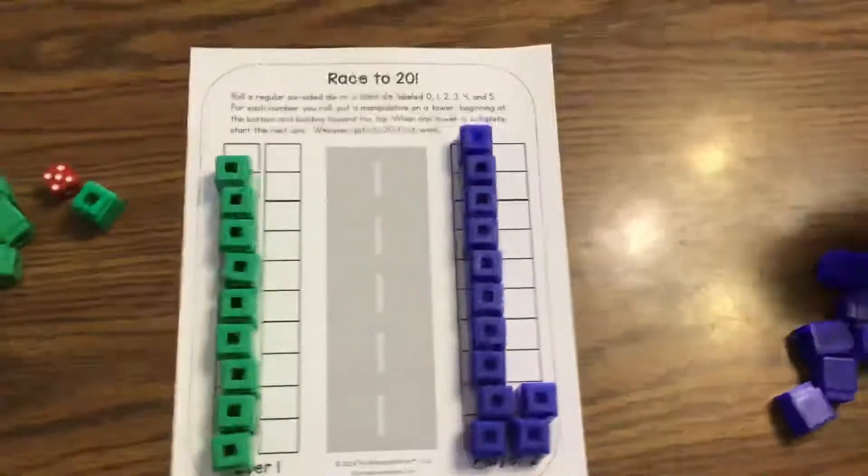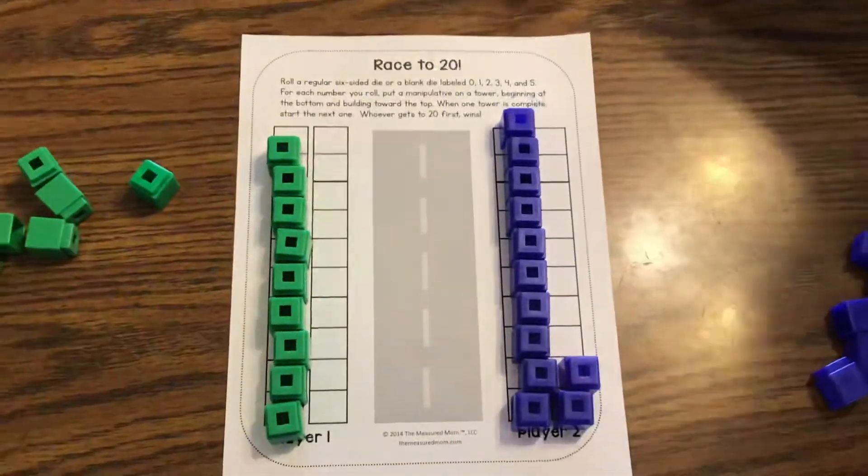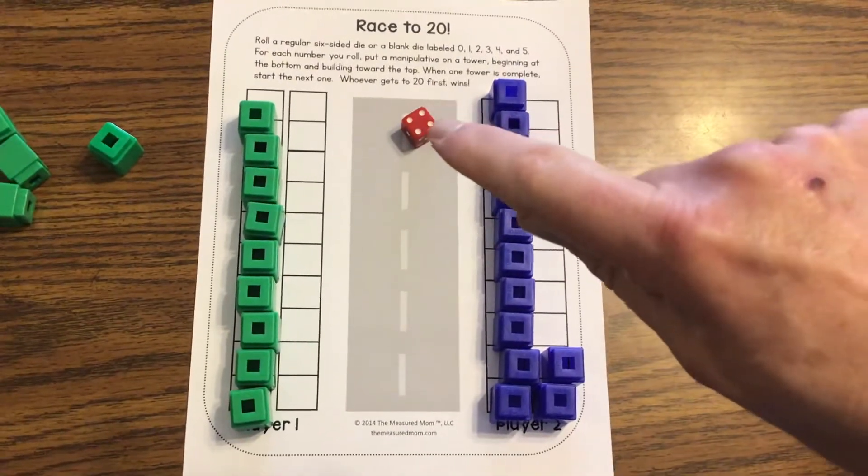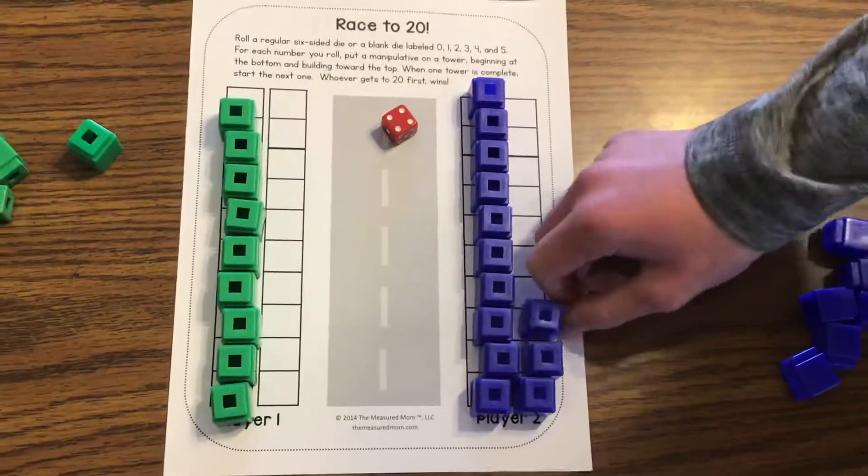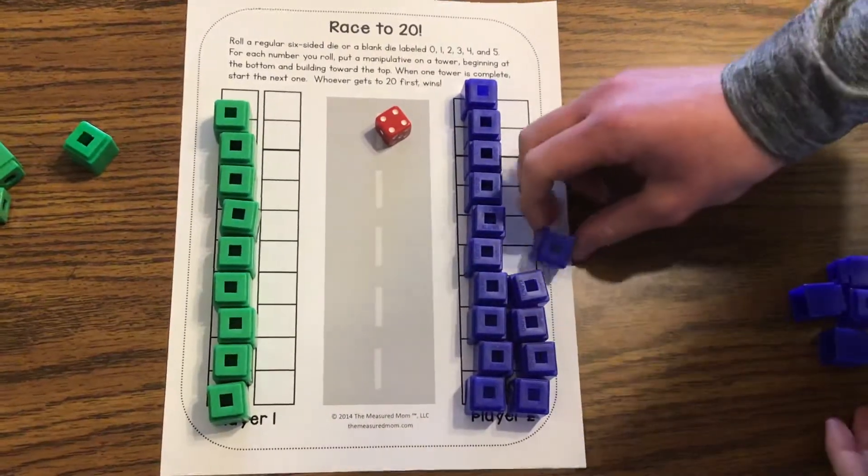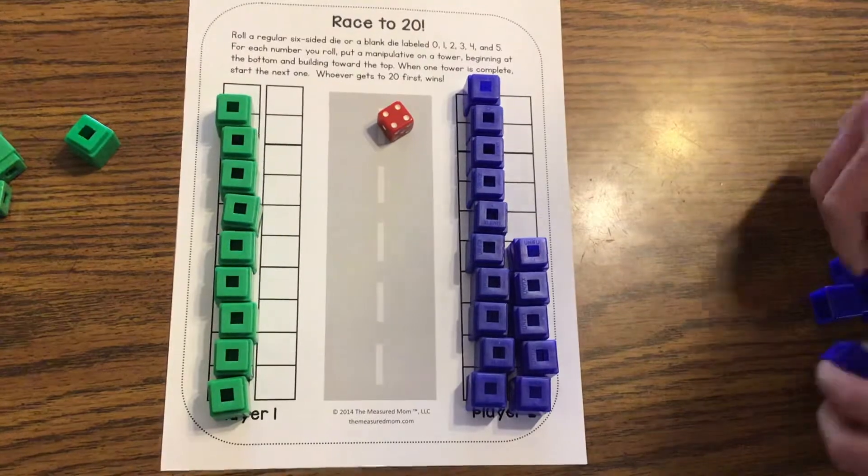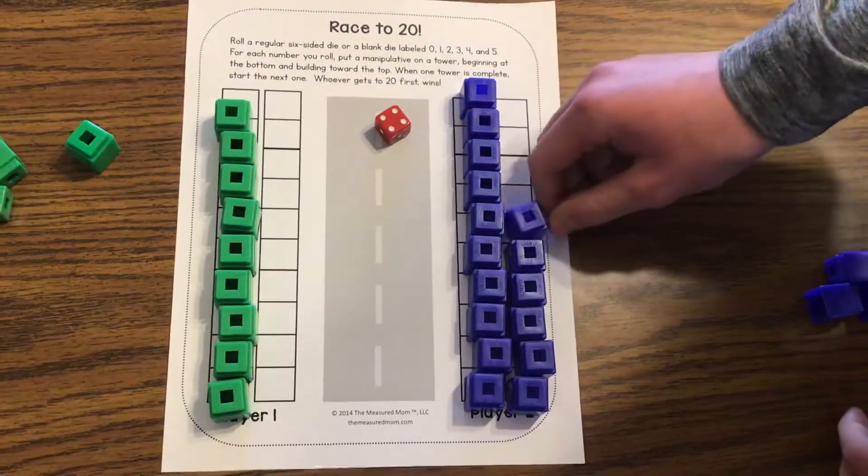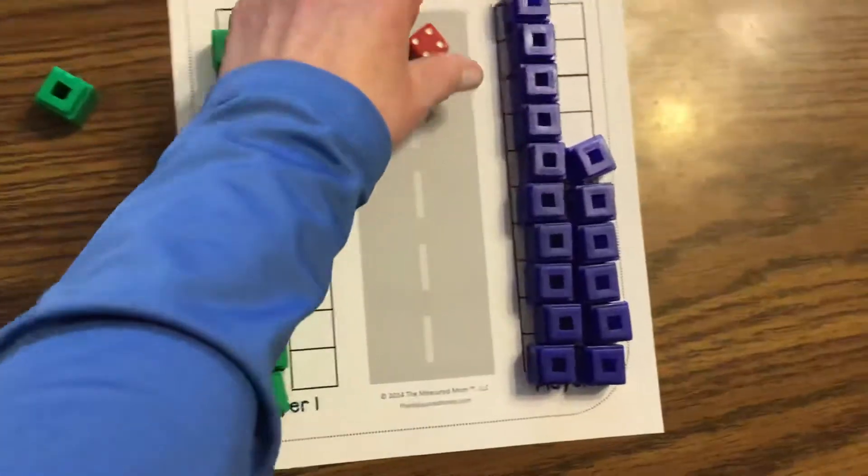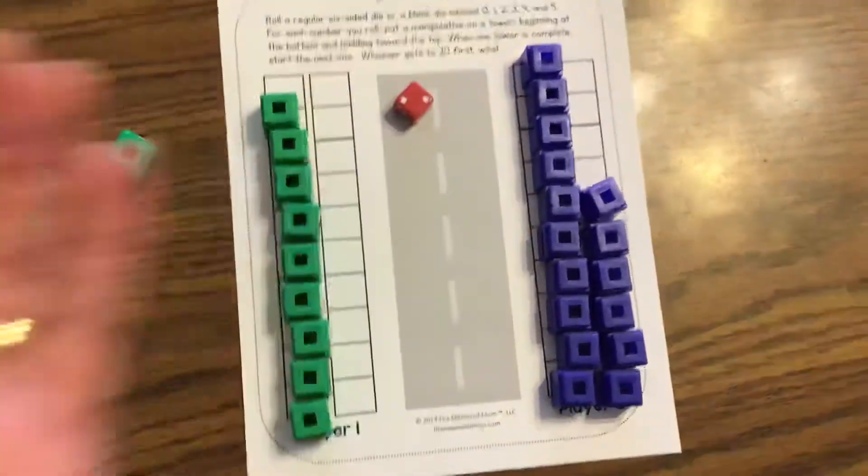Okay, Patrick's rolls next. How many did Patrick get? One, two, three, four. One, two, three, four. All right. Oh my, Patrick's almost done. He almost won the race.